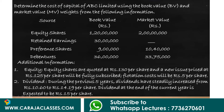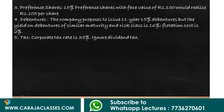Dividend at the end of the current year is expected to be rupees 15 per share. 15 percent preference shares with face value rupees 100 would realize rupees 105 per share. The company proposes to issue 11-year 15 percent debentures, but the yield on debentures of similar maturity and risk class is 16 percent. Flotation cost is 2 percent. Corporate tax rate is 35 percent; ignore dividend tax.